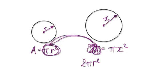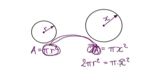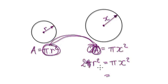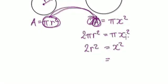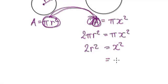So this 2 is here, and the A is actually pi r squared. We are searching for a value of x such that the area of the new circle equals 2A. Now divide both sides by pi, and that gives us 2r squared equals x squared. Now square root both sides, because we are trying to work out the value of x.